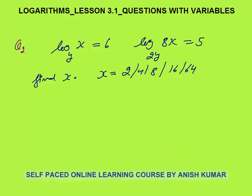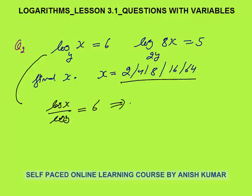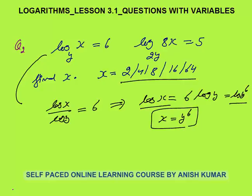Question 2: log x to the base y is 6, and log 8x to the base 2y is 5. We can't solve this by plugging in option values because both x and y are unknown — one variable would always remain. Better to solve by concept. Using the change-of-base formula: log x / log y = 6, so log x = 6 log y = log(y⁶). Since log a = log b implies a = b (same base, assuming base 10), we get x = y⁶.